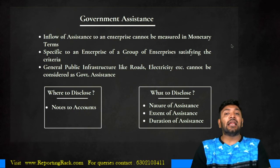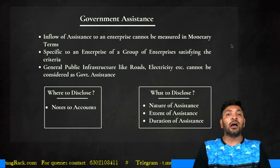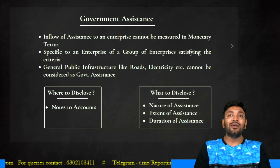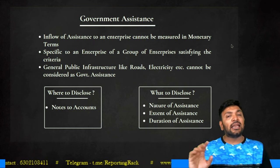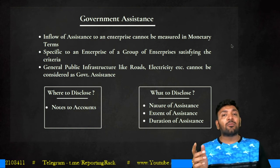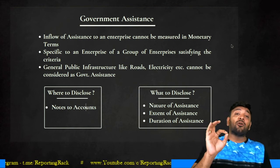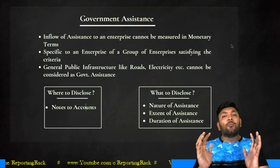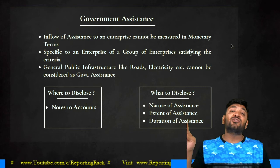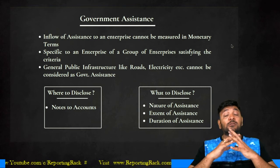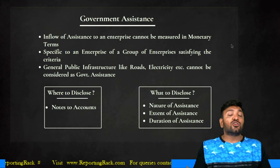Government assistance is where the inflow cannot be measured in monetary terms. For example, a sewage treatment plant pipeline laid by the government — you attach your drainage pipe and use it, but you have no idea of the monetary value. Such items are categorized as government assistance, which must be specifically provided to the enterprise or to a group of enterprises it belongs to — not general public infrastructure like roads or electricity.